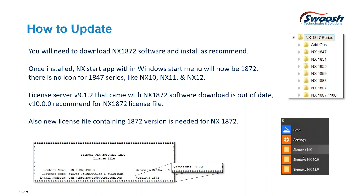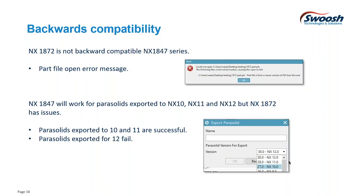We've also seen issues doing the download from Siemens' website. If you download 1872, it comes with license server 9.1. I was not able to use the current 1872 license with that server, so I had to get the license server 10 that they released at the beginning of July. Once I installed that, making sure my license said 1872 on it, I was able to get it installed and running. They had also mentioned it would be backward compatible — meaning you could create and save an 1872 file, go back to 1847, and open it. It doesn't work, so those wheels fall off that bus.